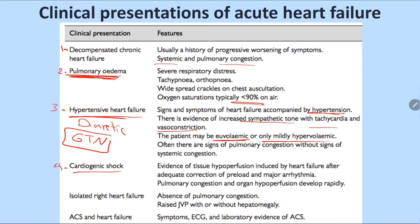Cardiogenic shock involves fluid overload combined with tissue hypoperfusion — the heart is too weak to pump blood well. This leads to organ failure. You cannot give diuretics because of the shock, and you cannot give GTN because of hypotension. You must start with inotropic agents like noradrenaline to elevate systolic blood pressure above 90–100 mmHg before giving a diuretic.